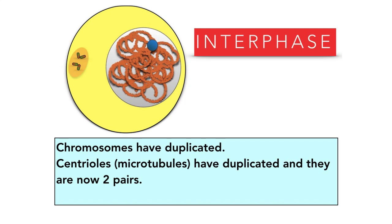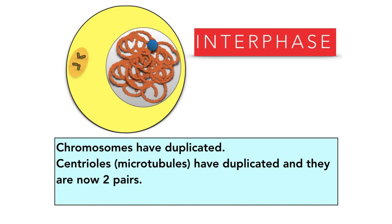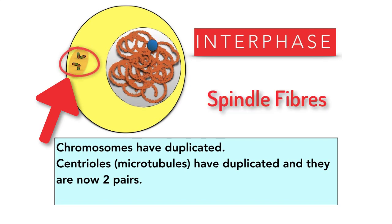By the end of interphase all preparations are fully completed. The cell is ready for mitosis. It has extra organelles, the chromosomes have duplicated, and centrioles — made up of microtubules — have duplicated and there are now two pairs. These will move to opposite poles of the cell and the spindle fibers will form between them.